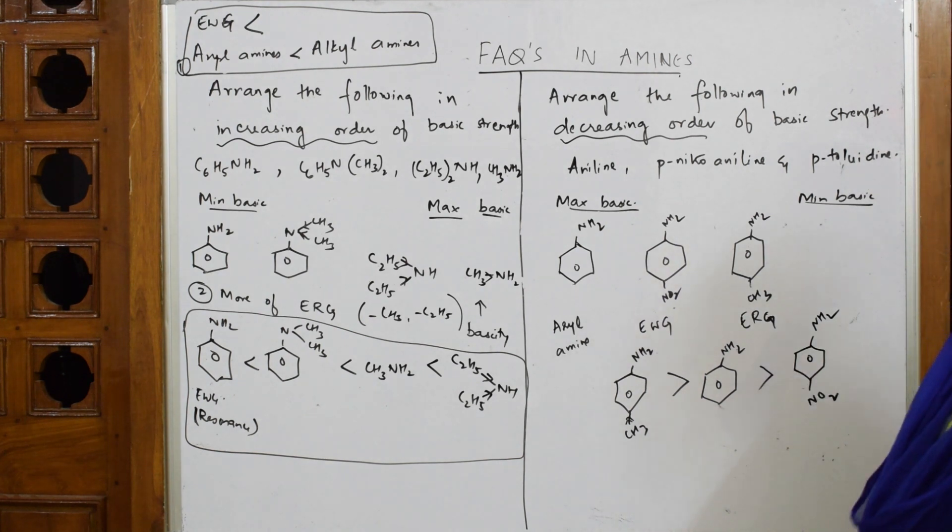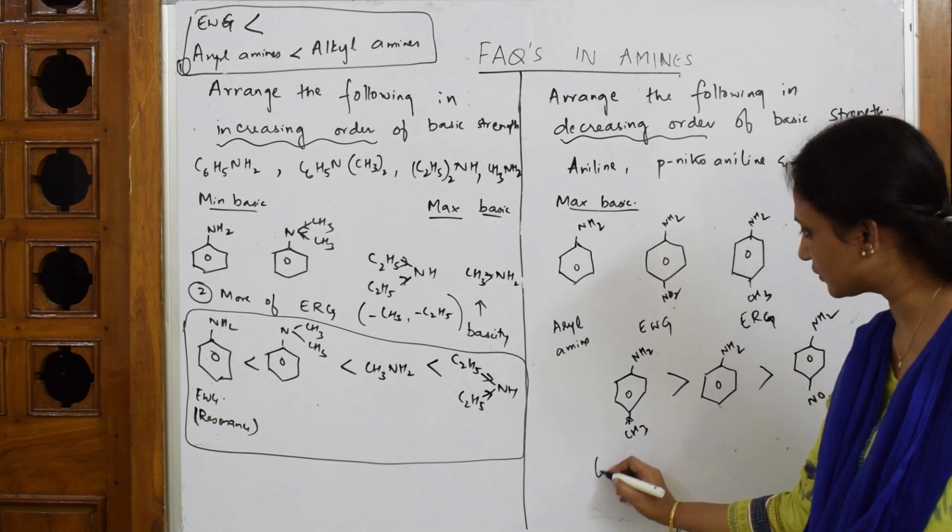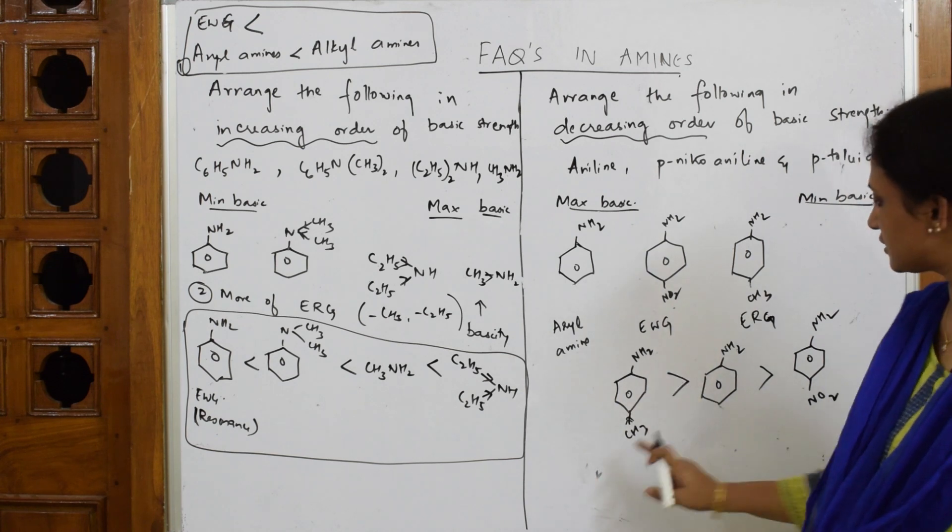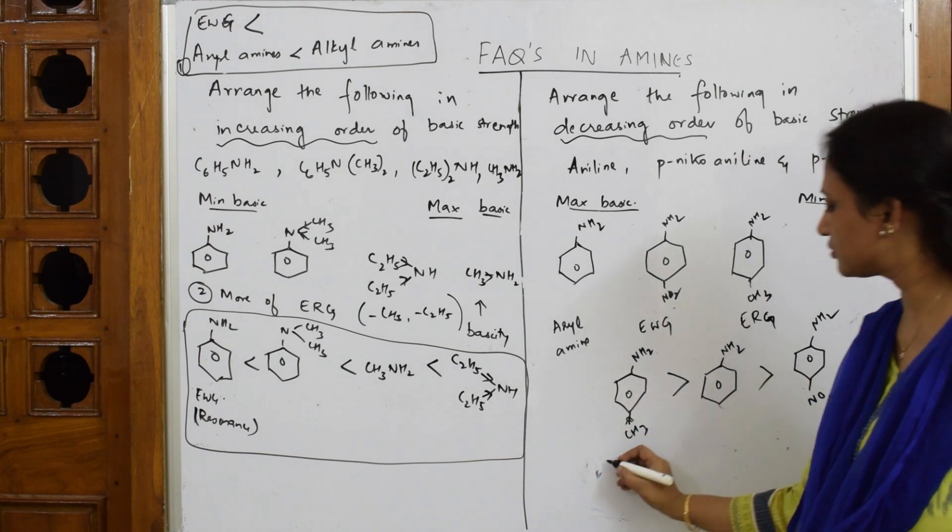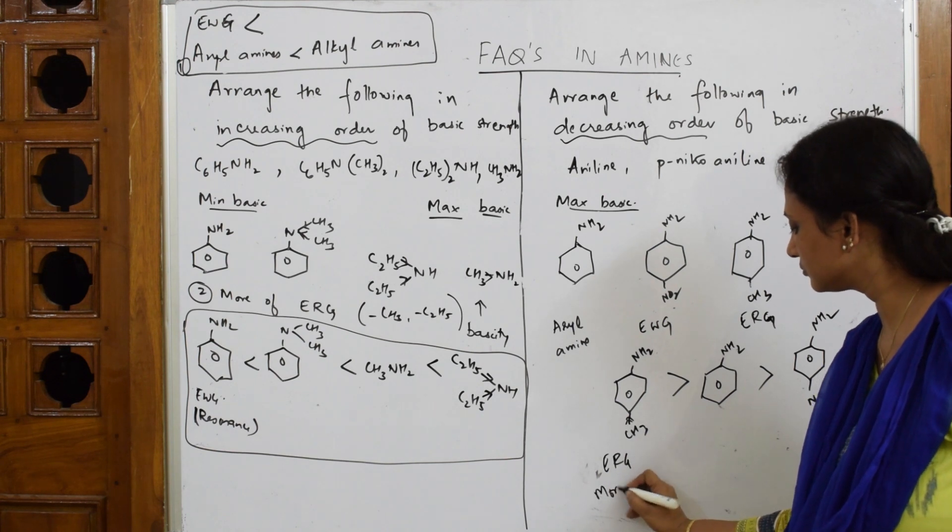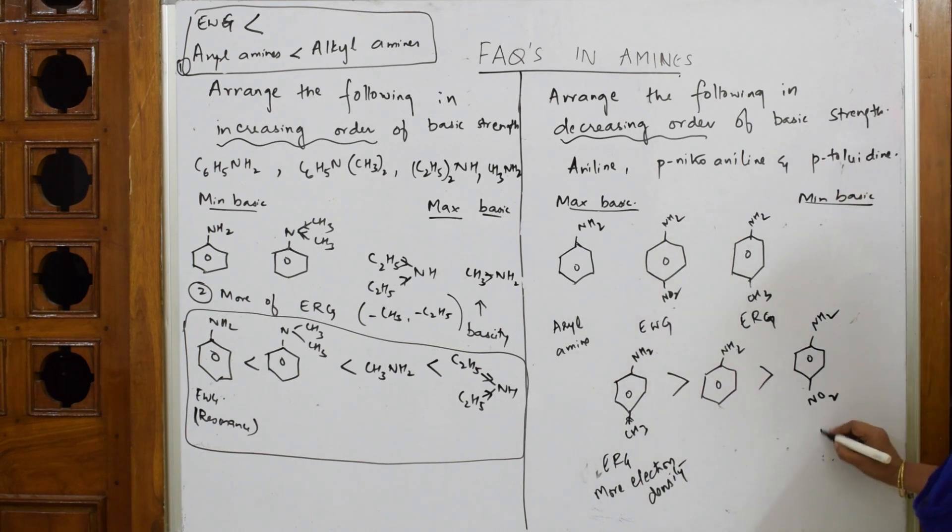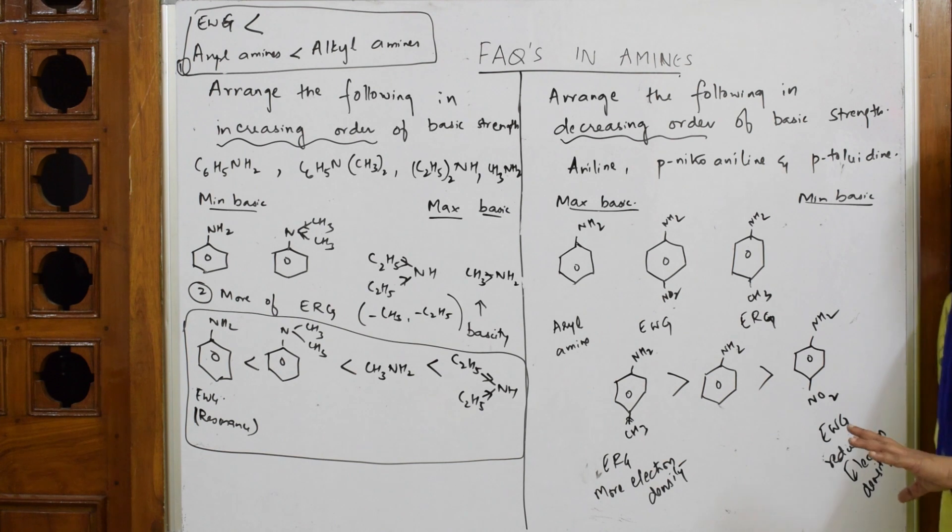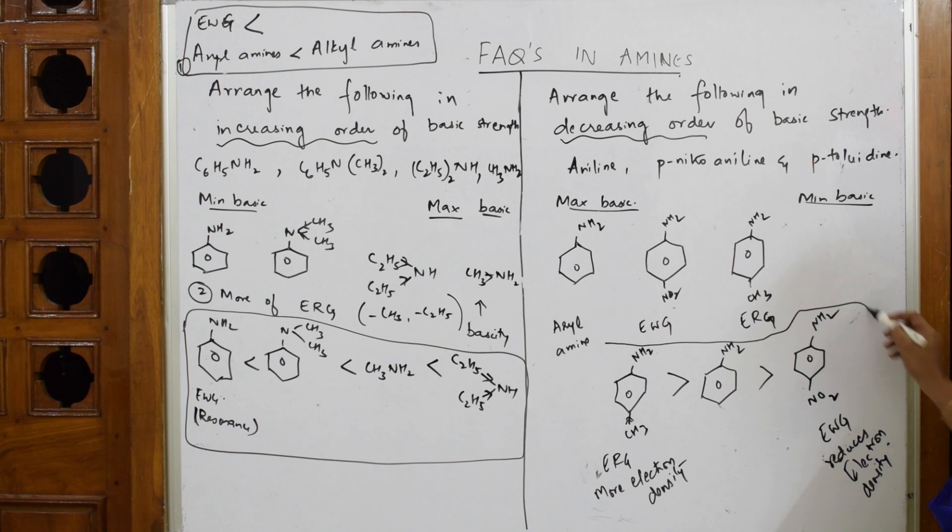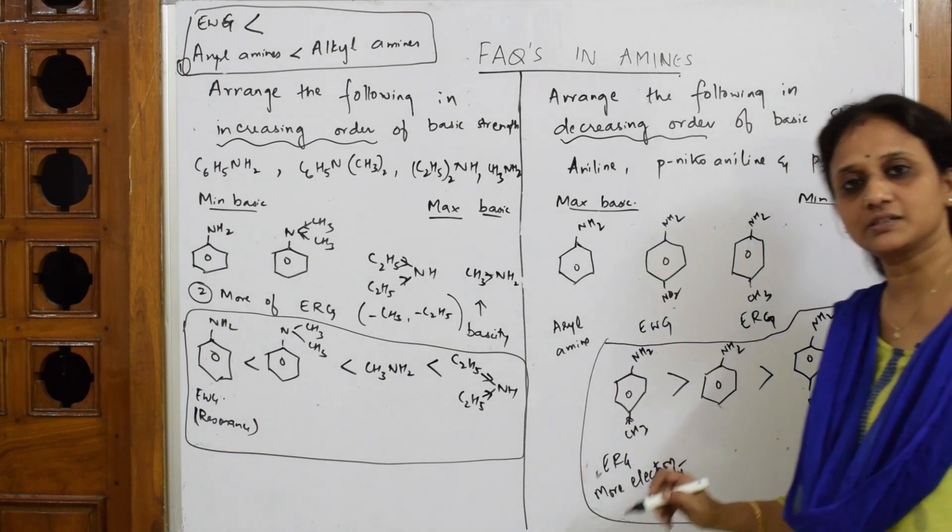I have already written: because of electron releasing group, more electron density - point number one. Electron withdrawing group reduces electron density. That's it, this is your concept. So please practice it. The concept is clear and this is how you're going to answer. Once you write, try to put it in a box. That's it, this is your concept.